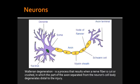Describe the physical appearance of a neuron. Neurons are signal-relaying cells with dendrites, where they receive input. They also have a cell body and an axon, which sends the output.